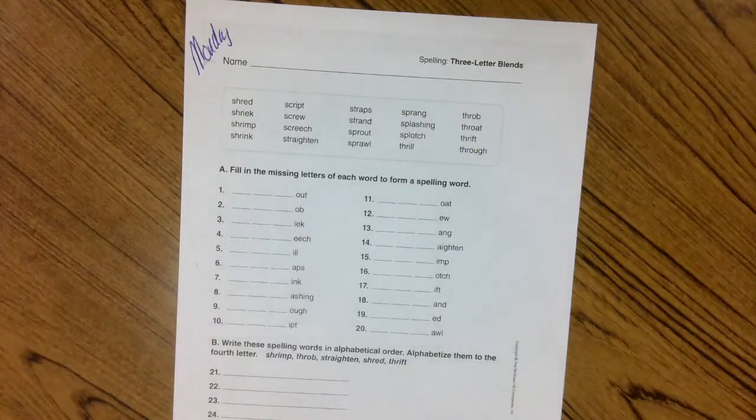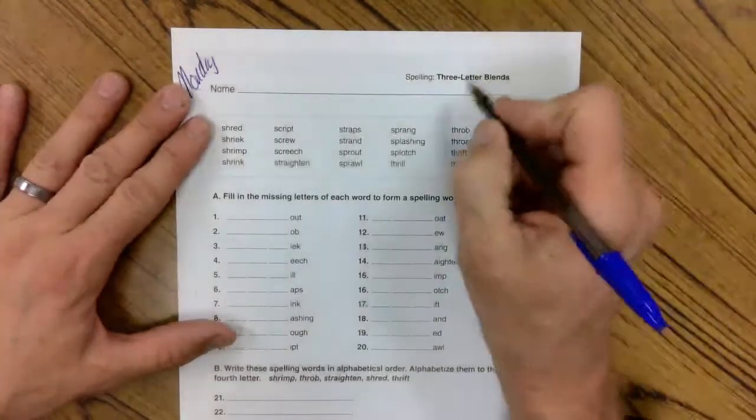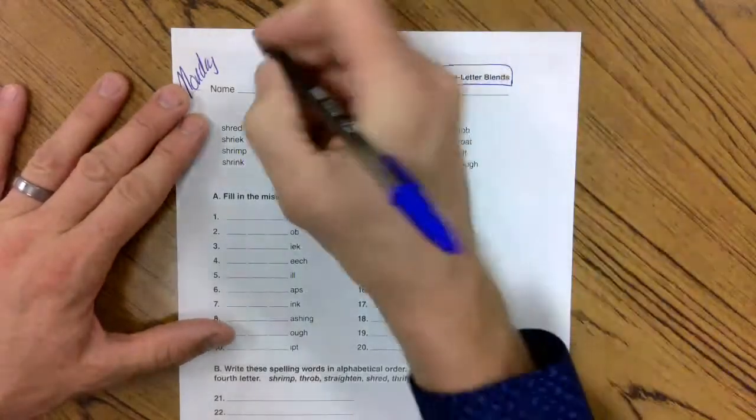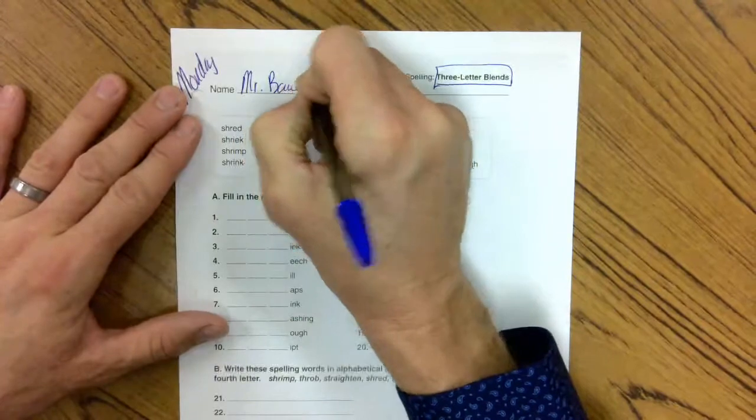Good morning, fourth grade. Our spelling objective this week is three-letter blends. You can start with your name at the top of the paper.